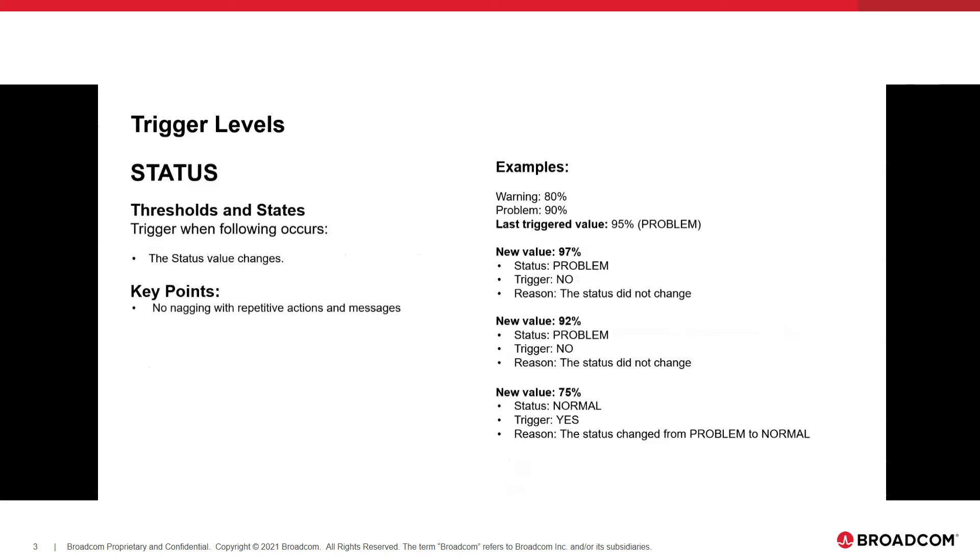The status one is slightly just a smaller version of change. It only alerts and gives you a notification whenever the status value changes, or you might say the color changes. So it's a very simple thing. These are the same examples as before. We started with the 95 at problem. Our new value is 97. Still a problem. Doesn't matter if it got worse or not. It did not change color or status. It's still a problem. You're not going to get told again. We'll jump to the bottom one. 75 goes to normal. That does change a status color. It goes from problem to normal. Therefore, that meets the criteria of the status trigger level, and you will get new notifications.